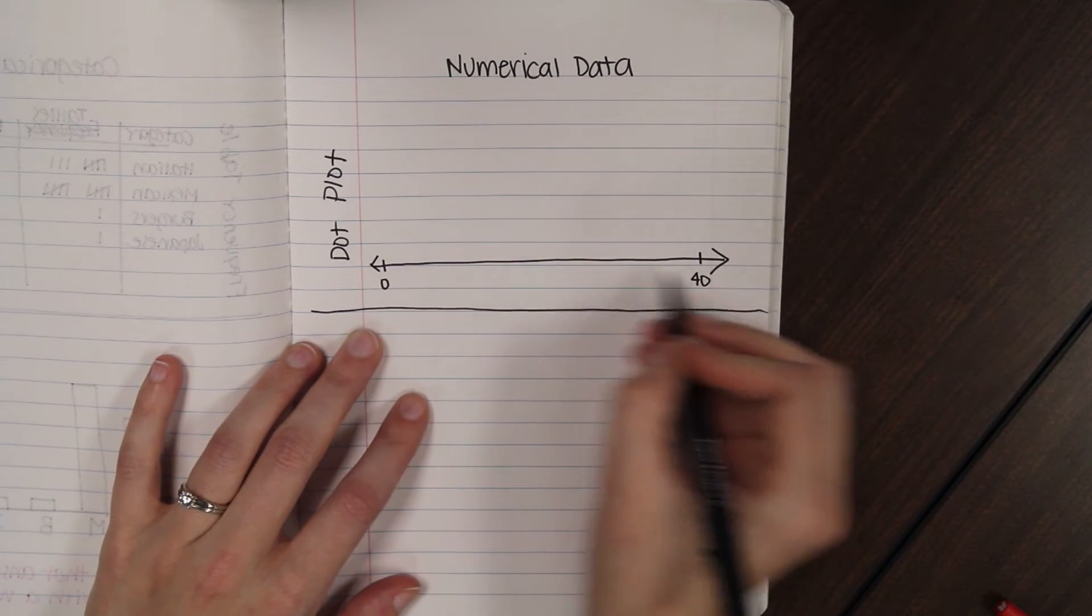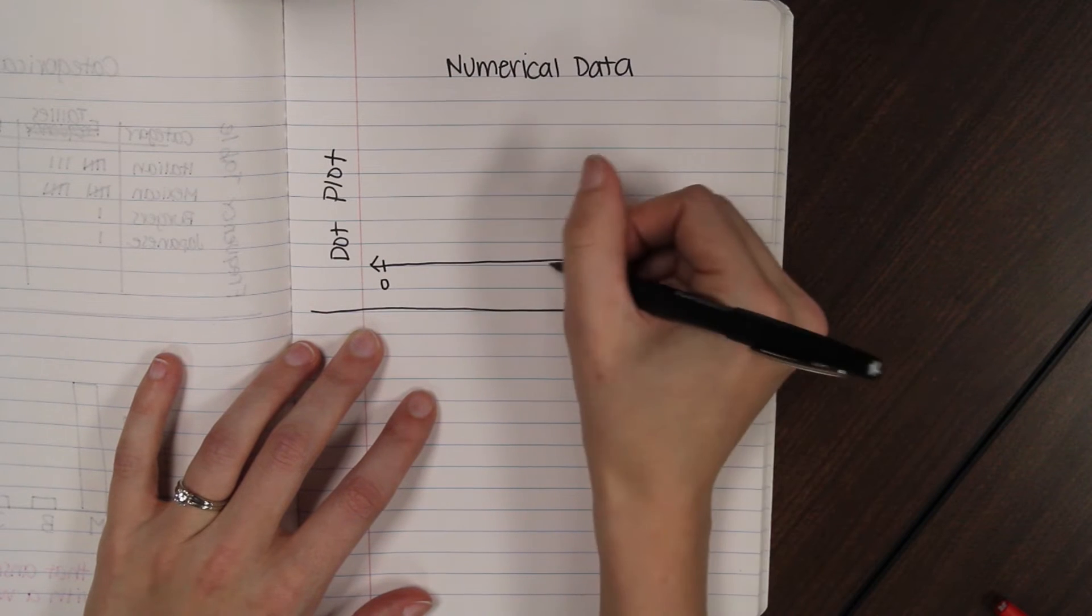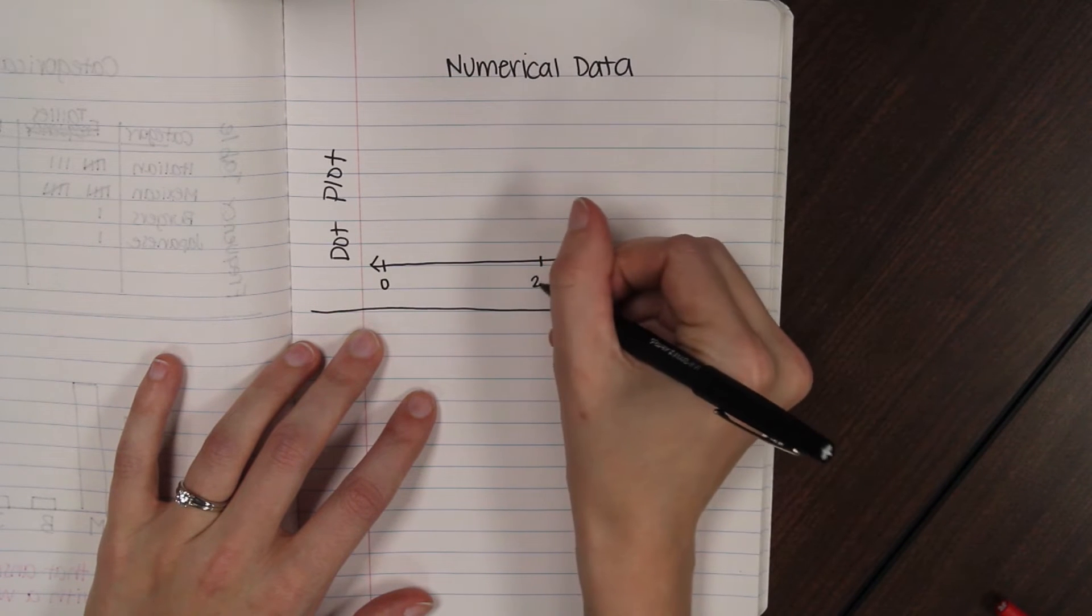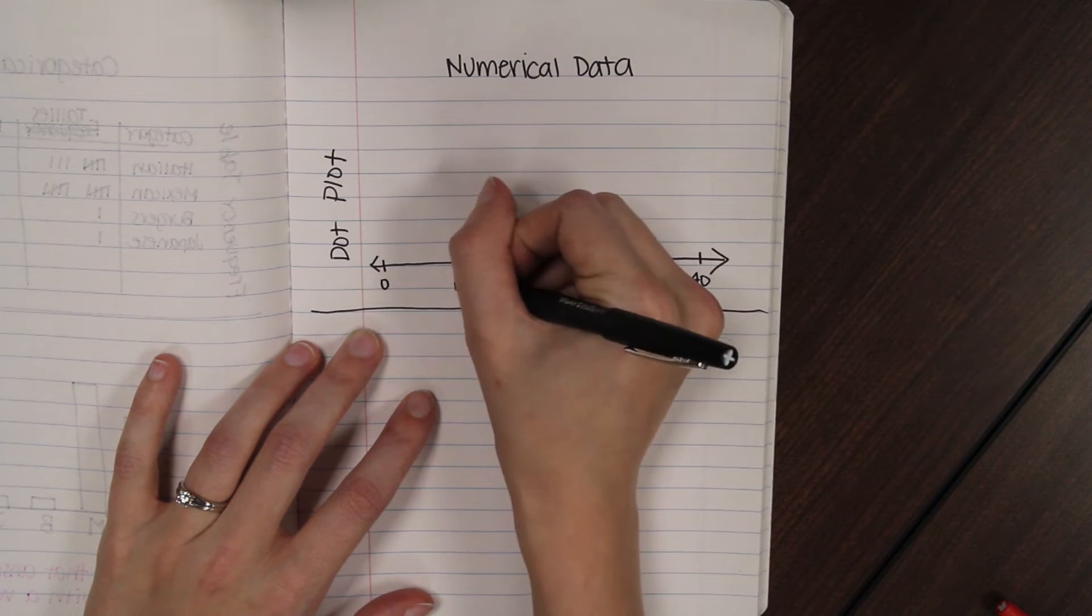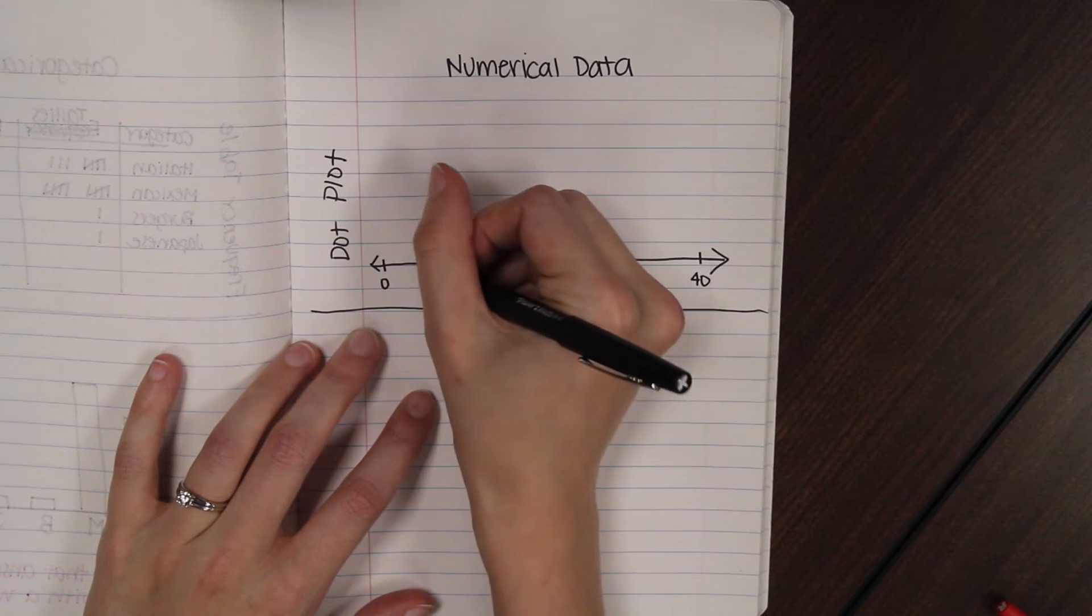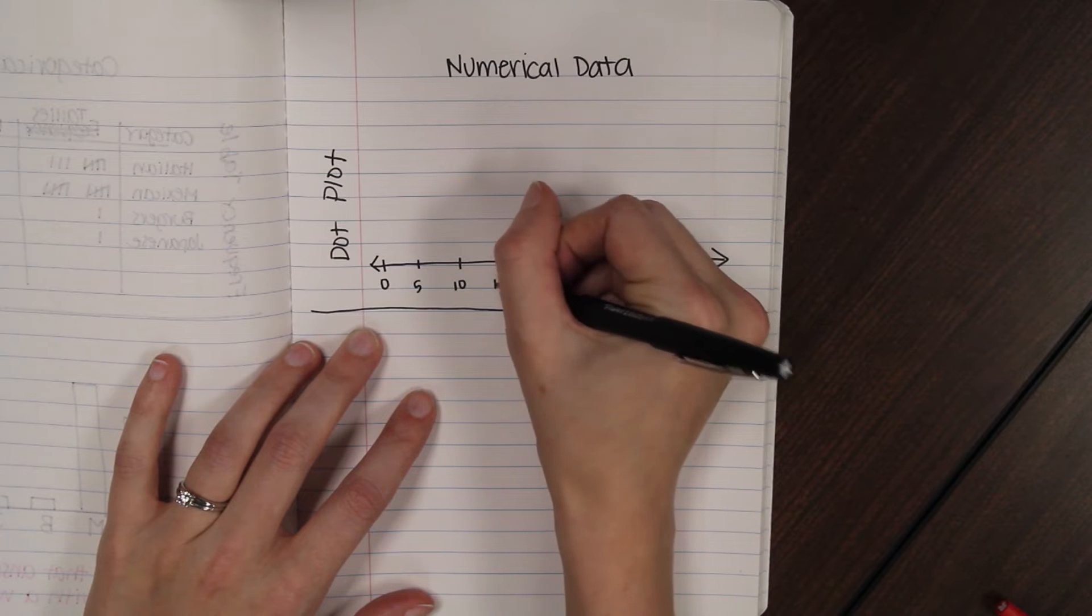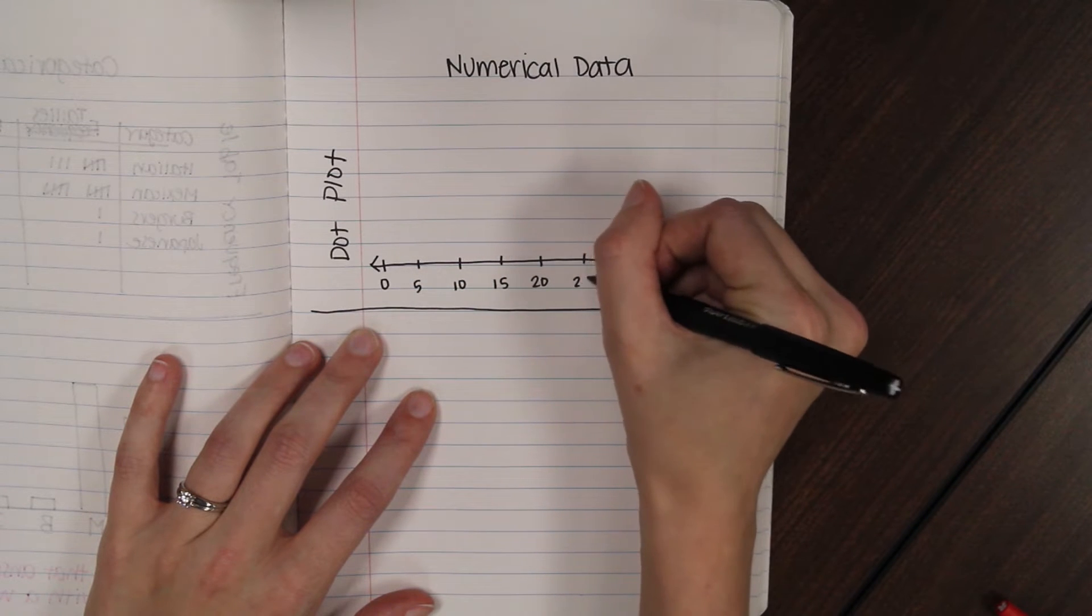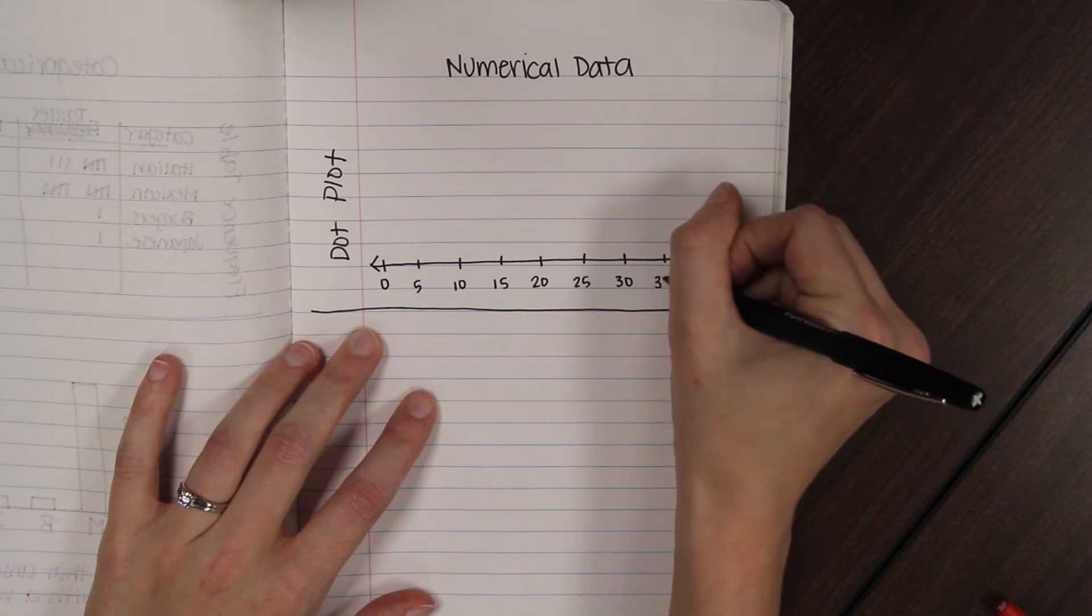And you don't have to put 40 tick marks in between. I'm just going to count by, like, fives, probably. 10, 20, 30 is counting by tens. And I'll put one more little set of tick marks in between so we can count by fives.